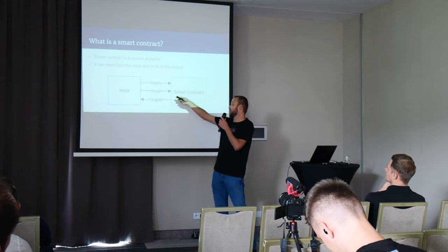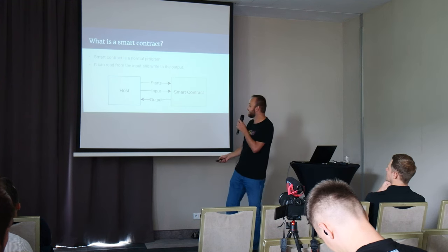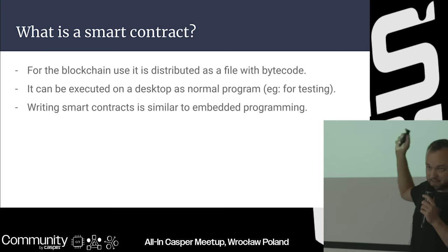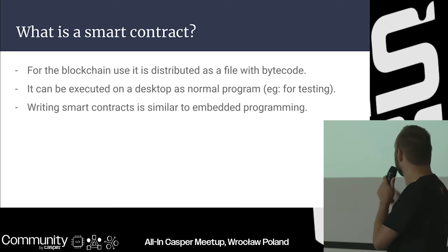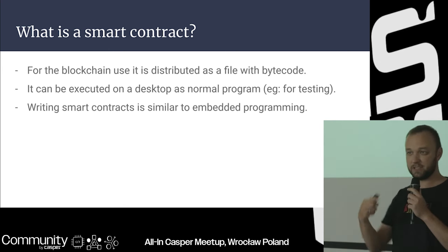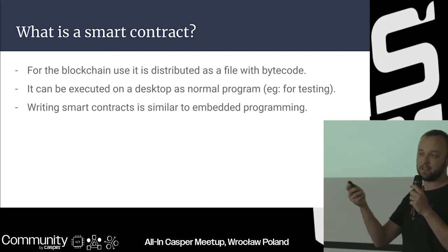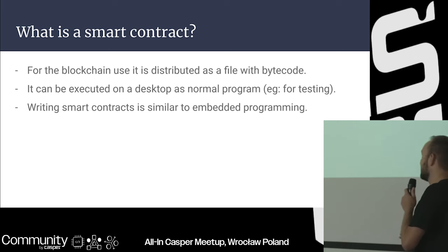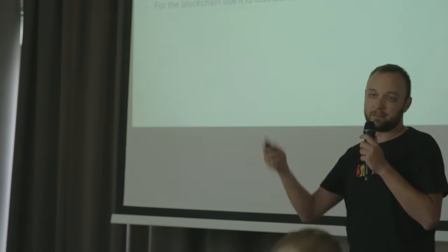Fun fact: smart contracts for blockchains are distributed as WASM files. Like the old-time .exe, .dll, or .so files, we just have our own equivalent, and there is bytecode inside that does stuff.